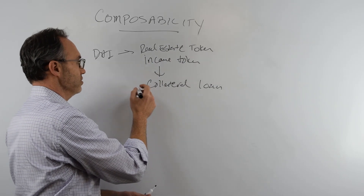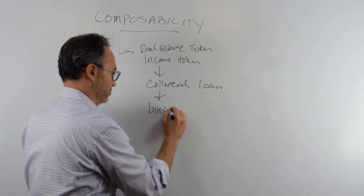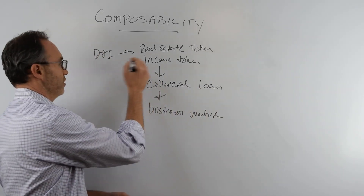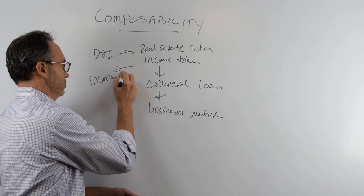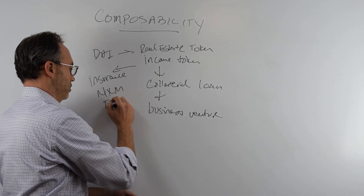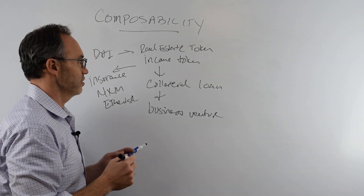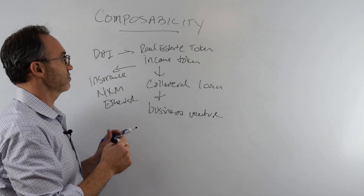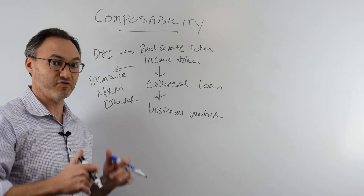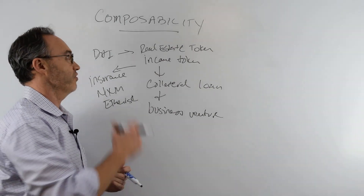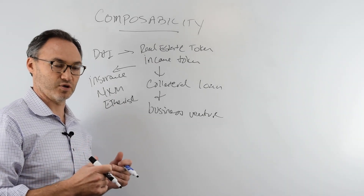Now we start talking about composability. I might use that loan to fund some sort of business venture. In addition to that, I might need some sort of insurance and I can create that using Nexus Mutual or Ether Risk. To me, that's what's really interesting and what's really neat right now about decentralized finance. All these great teams from around the world are getting together because of the open source nature and building this composability — utilizing it to build really interesting structures and financial tools that are actually not available in the traditional world.